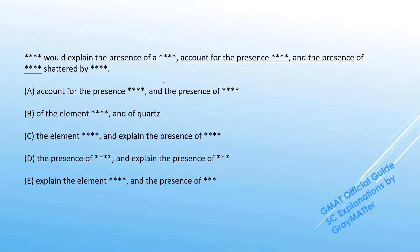This question is checking for parallel construction in a list. When we read through the question, we can see the conjunction 'and,' which indicates that we can check for list parallelism. Whenever there is an 'and,' it is always safe to check whether there is a list and whether that list is in perfect parallelism. The main rule to keep in mind is that all elements in the list must be similar and perfectly balanced.